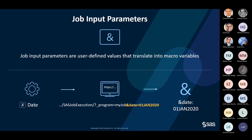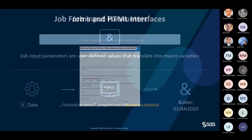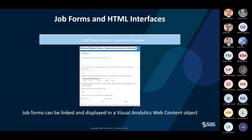To make it simpler and provide a more visual interface for business users, job forms and HTML interfaces can be used. Here is an example from SAS Visual Analytics where a form is displayed, allowing users to feed job input parameters through a GUI. They can submit the job, which then executes in the background to run the scenario analysis. Job forms can be linked and displayed in a Visual Analytics web content object.